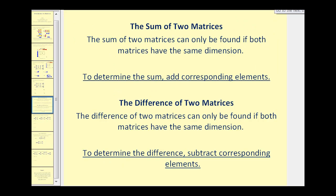Now let's talk about how we can add and subtract matrices. The sum of two matrices can only be found if both matrices have the same dimension. If they don't have the same dimension, they cannot be added or subtracted. Once we know that two matrices have the same dimension, to determine the sum we just add the corresponding elements. Similarly, to find the difference, we just subtract the corresponding elements. Let's take a look at a couple of examples.